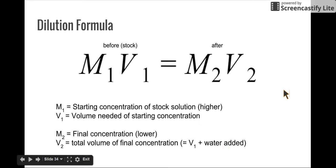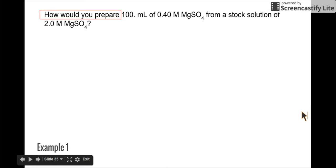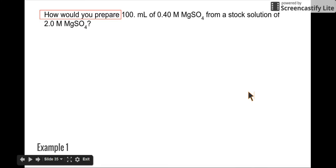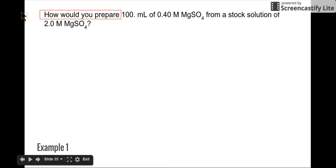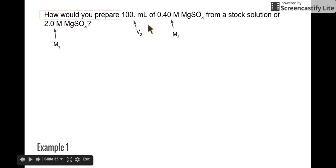You might be asked questions about how much water you need to add. So let's try an example. How would you prepare 100 milliliters of a 0.4 molar magnesium sulfate solution from a stock solution of 2.0 molar magnesium sulfate? I always like to say: write down what the question is and what you have, then write down the equation and plug and check. So V2 is 100 milliliters — that's what we want to end up with. M2 is 0.4 molar — our final molarity. And M1 is 2.0 molar from the stock solution. So what we're missing is V1.